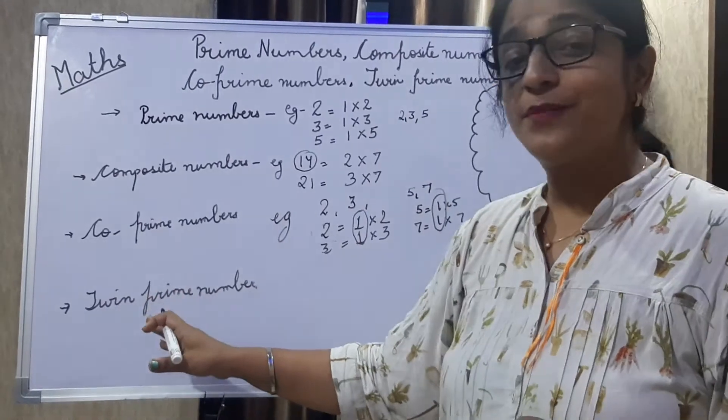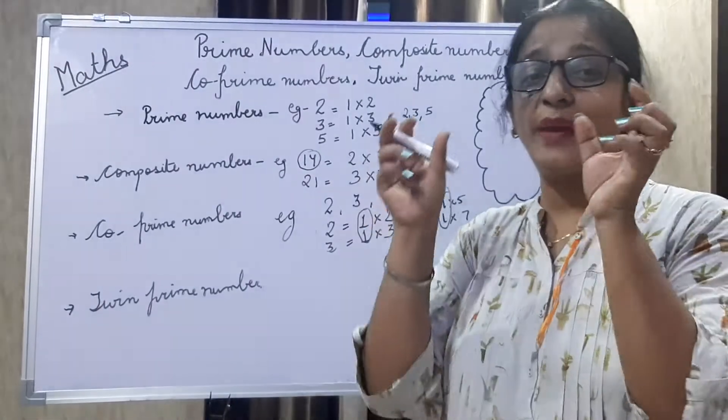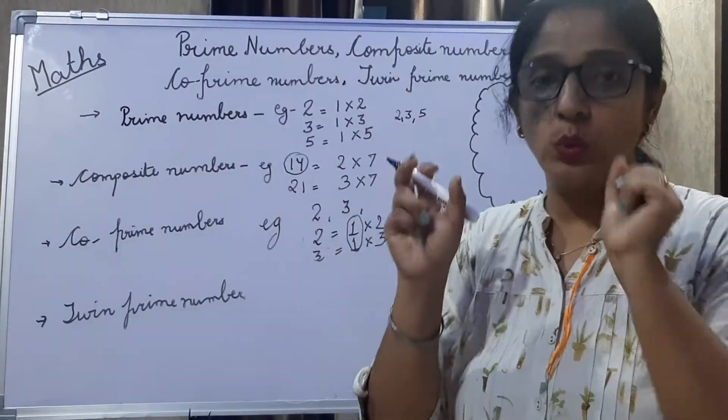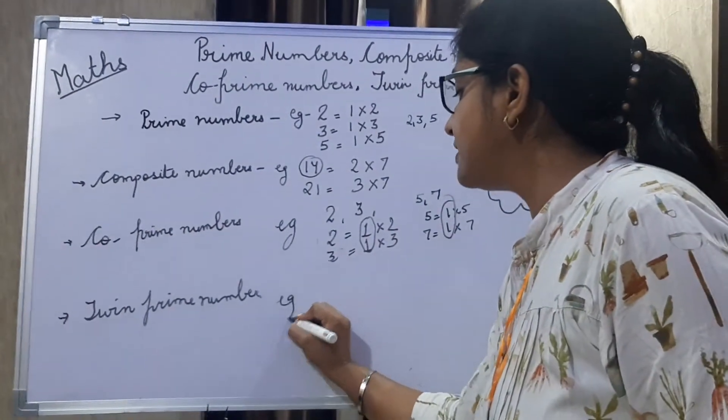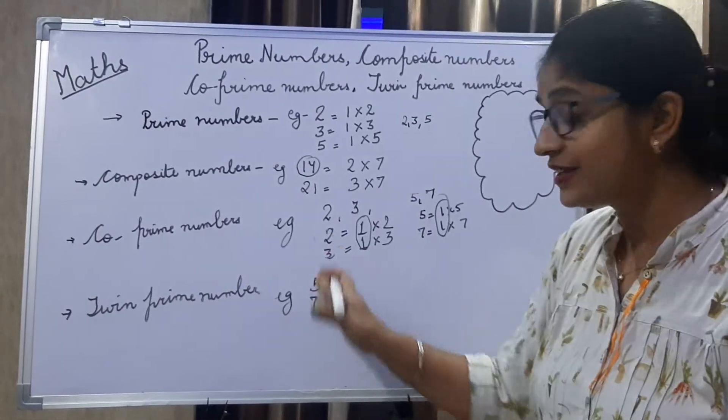Let's come to the next type of numbers which are twin prime numbers. Twin prime numbers are those prime numbers, a pair of prime numbers which have the difference of two. Suppose, like for example, we take five is a prime number. Seven is a prime number and the difference is also two.